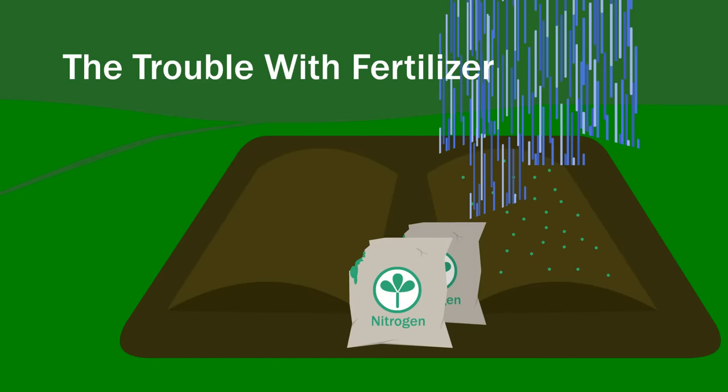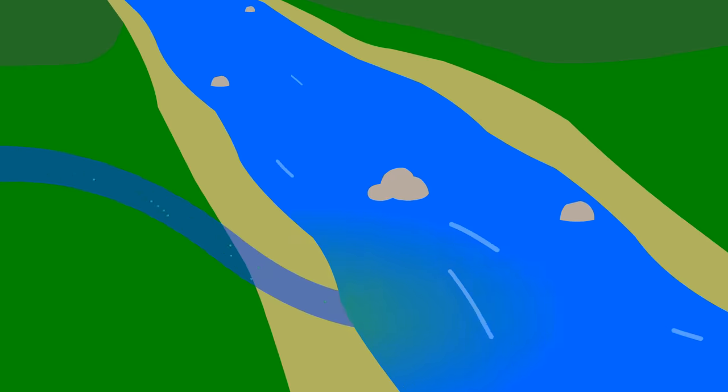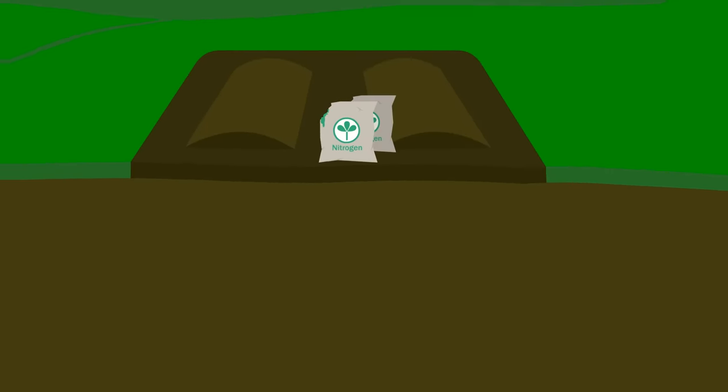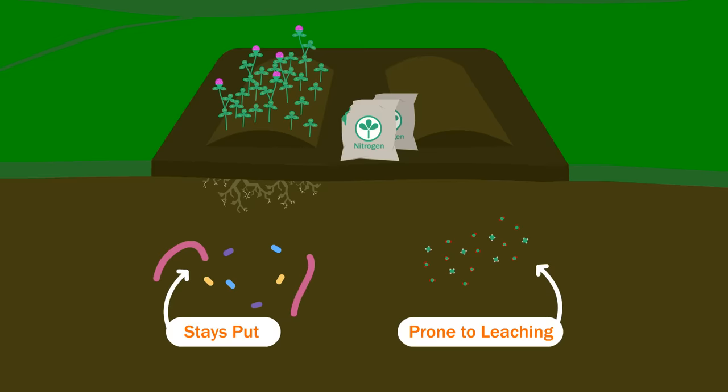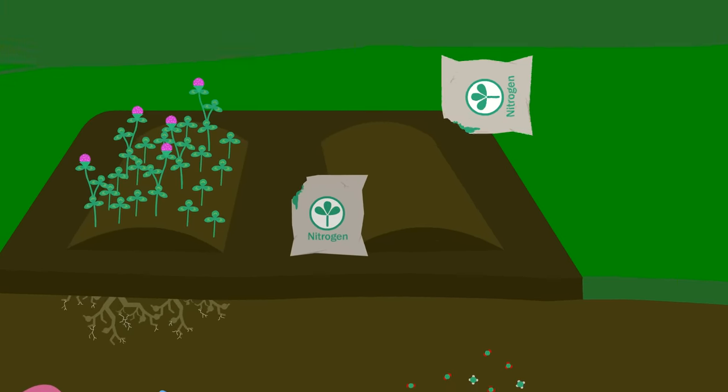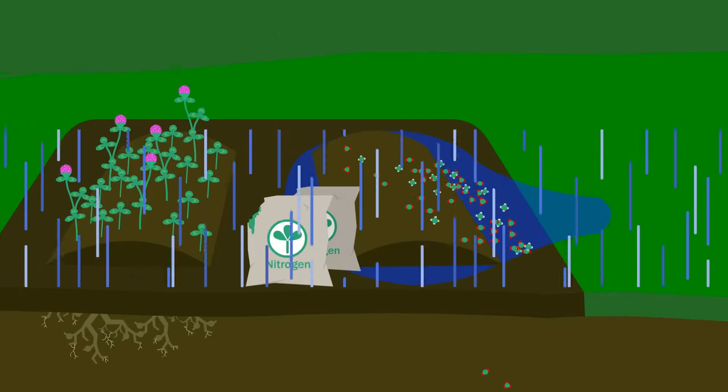You know how earlier I said that water can carry soil nitrogen away? This nitrogen ends up in rivers, which can disrupt the ecosystem by enabling algae to dominate. But remember, this only happens to loose nitrogen in the soil, and not to nitrogen embedded in organisms. And fertilizer adds pure nitrogen without the organisms. So when it rains, huge amounts of it run off and pollute the water.